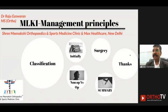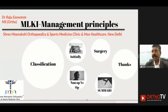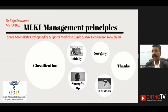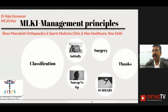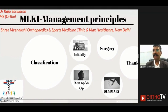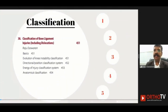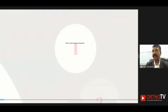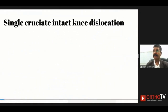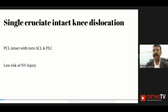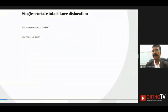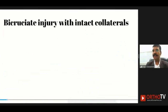When it comes to multi-ligament injuries of the knee, I like to classify them using the KD classification, also known as the Schenck classification. KD1 refers to single cruciate intact knee dislocations — a PCL-intact knee with a torn ACL and PLC. These have low risk of neurovascular injuries.